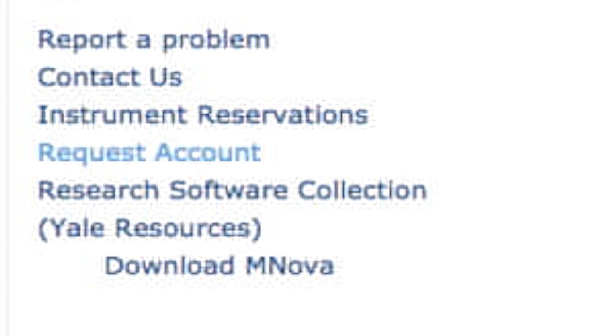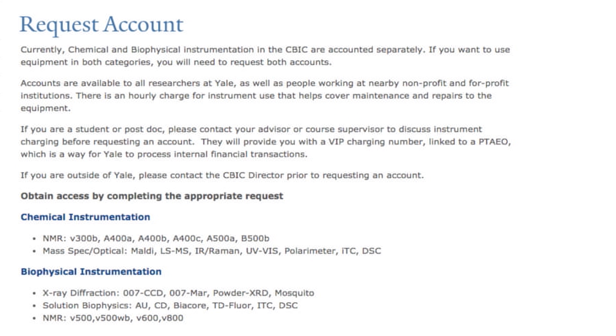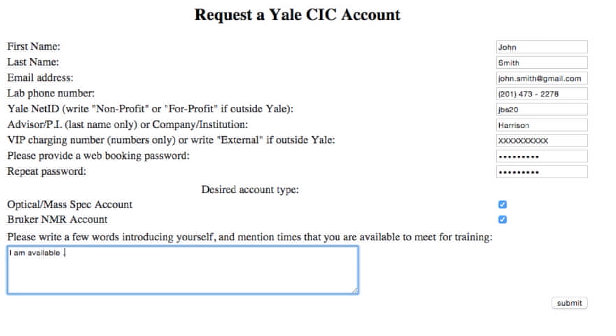Once you know which VIP charging number to use, go to the CBIC website and request an account. A member of the CBIC staff will get back to you to set up your account and arrange training. If you haven't heard back from us within two to three business days, please contact me directly or email me at eric.paulson@yale.edu to make sure that we've received your account request.